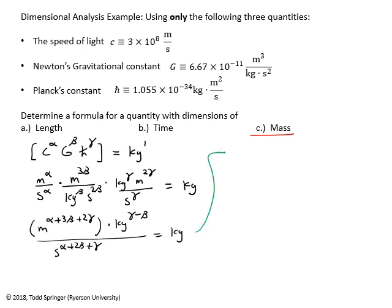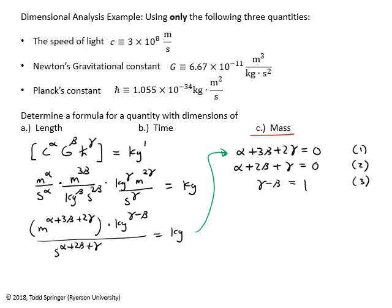From the exponent of meters: α + 3β + 2γ = 0 (equation 1). From the exponent of seconds: α + 2β + γ = 0 (equation 2). And for kilograms: γ − β = 1 (equation 3). Now I have three equations and three unknowns — α, β, and γ — and I just need to solve them.